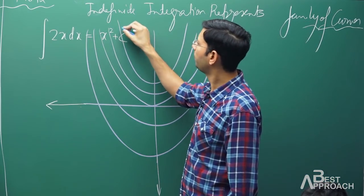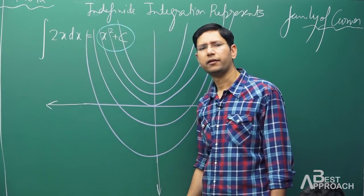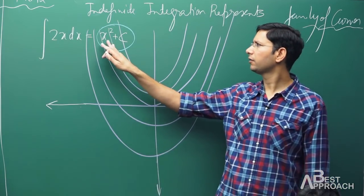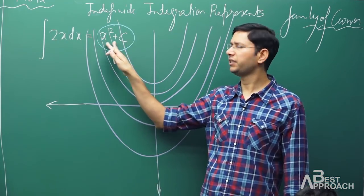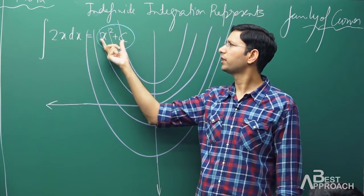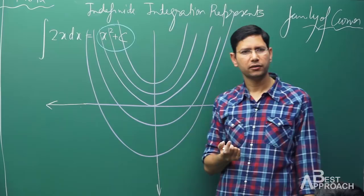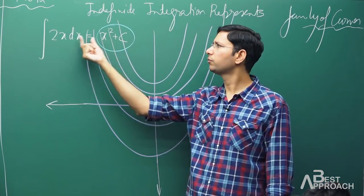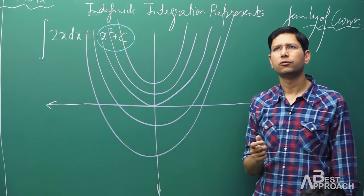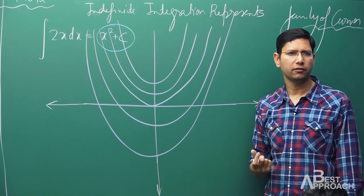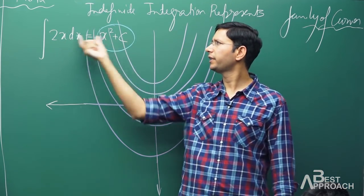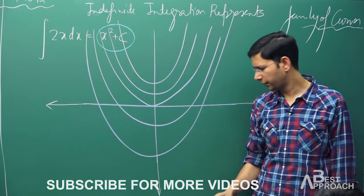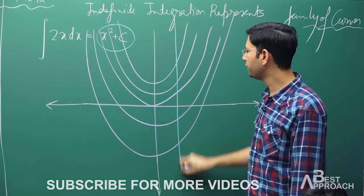The common thing about all the x² + c functions is that if we differentiate any of them, we always get 2x. What is the difference between x² + c for different values of c? If you differentiate any of them, the derivative is always the same.